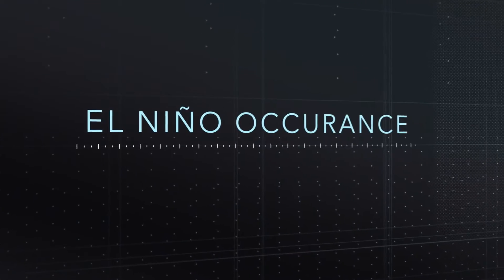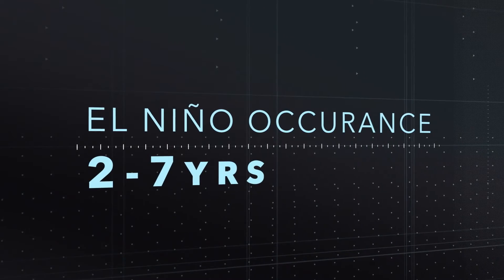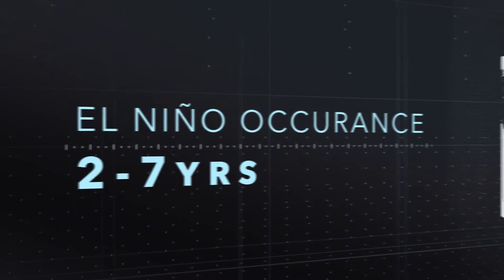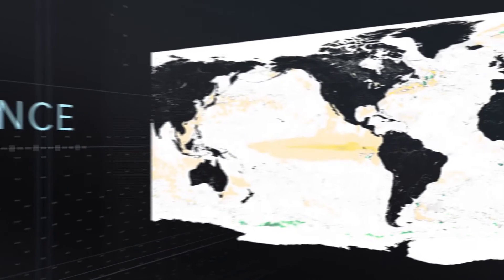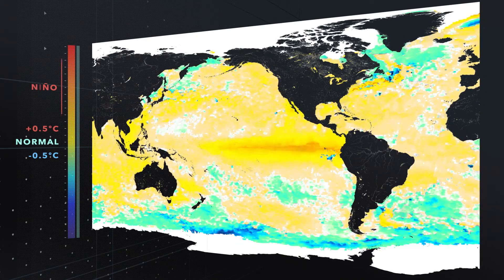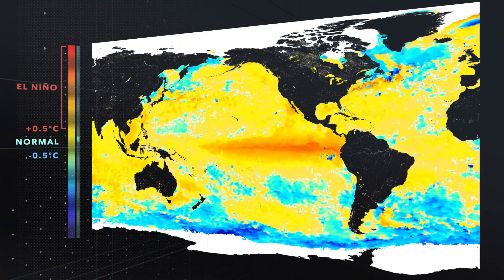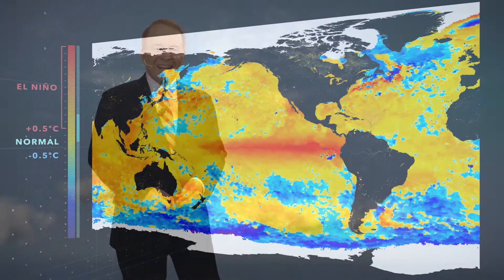El Niño occurs approximately every two to seven years. The event is the warming of the Pacific equatorial ocean waters to at least one-half degree Celsius above normal for three consecutive months.